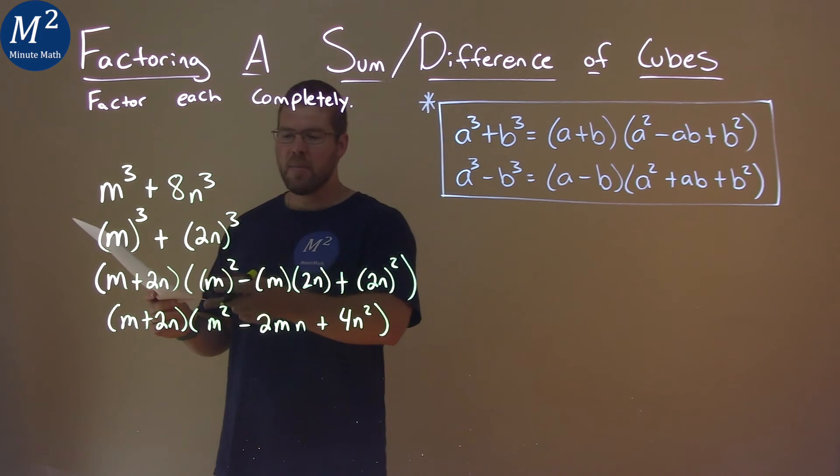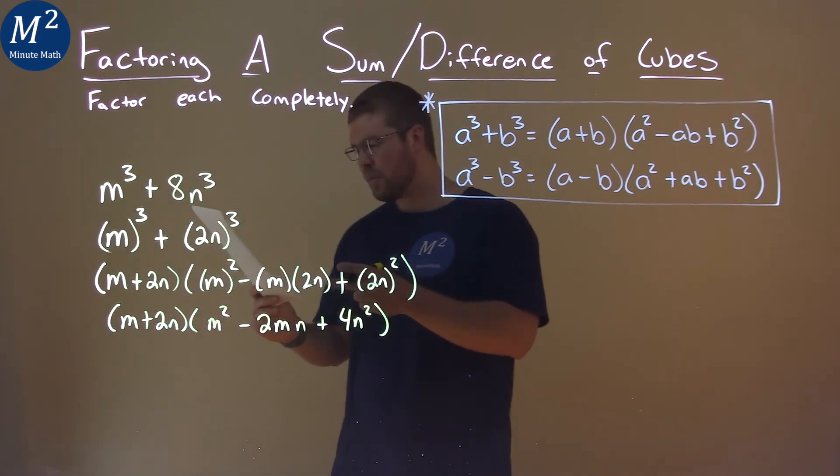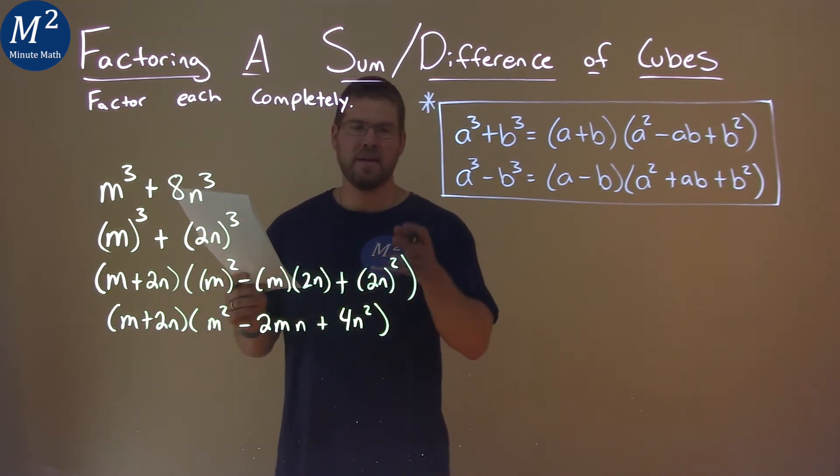And so our final answer here is m plus 2n times m squared minus 2mn plus 4n squared.